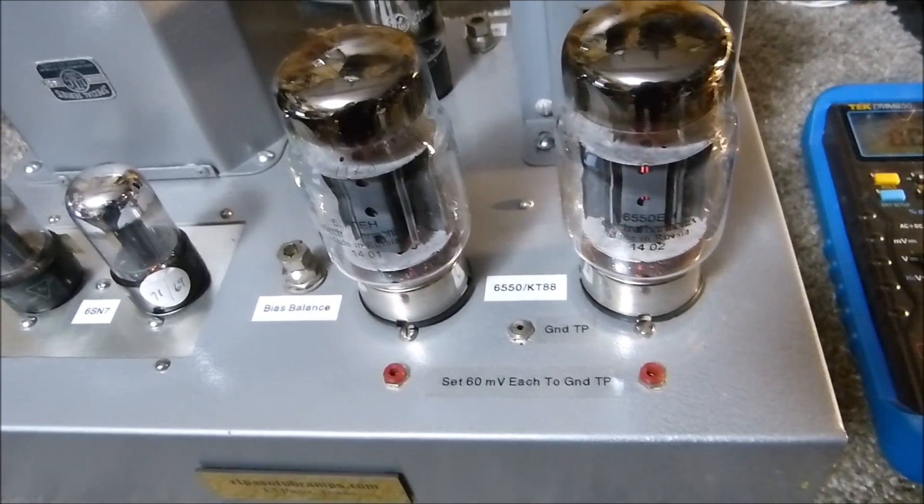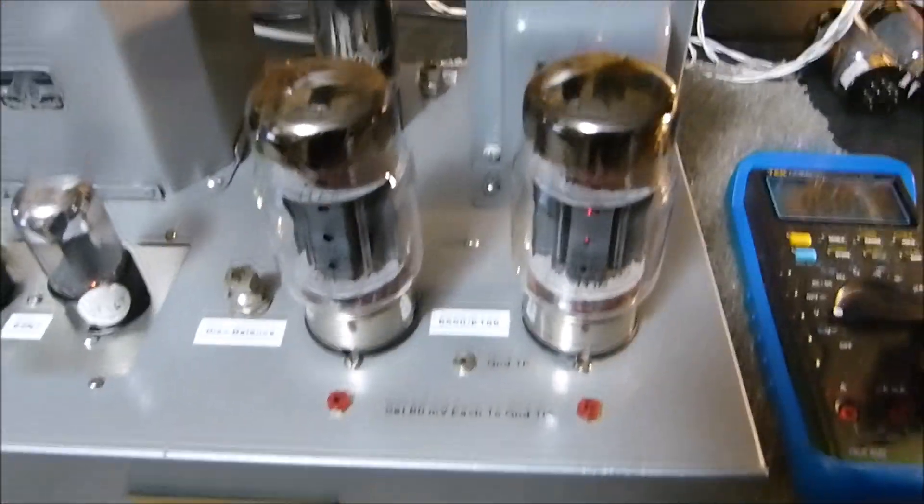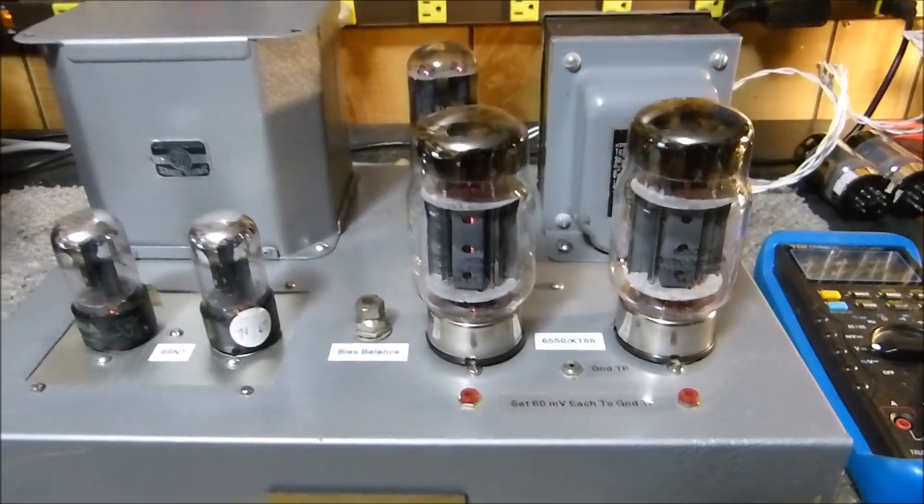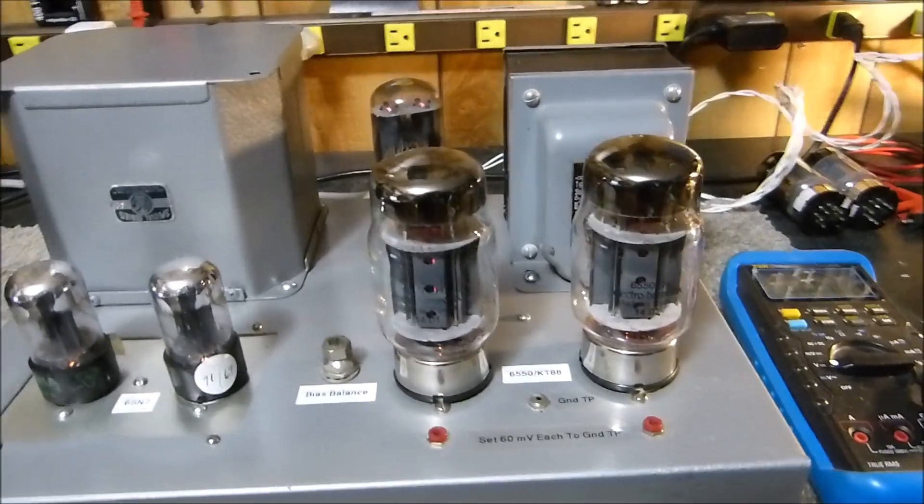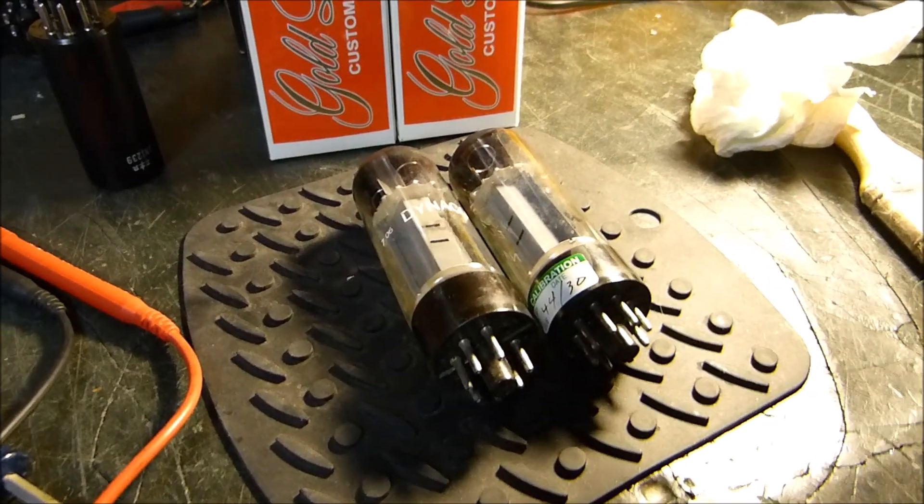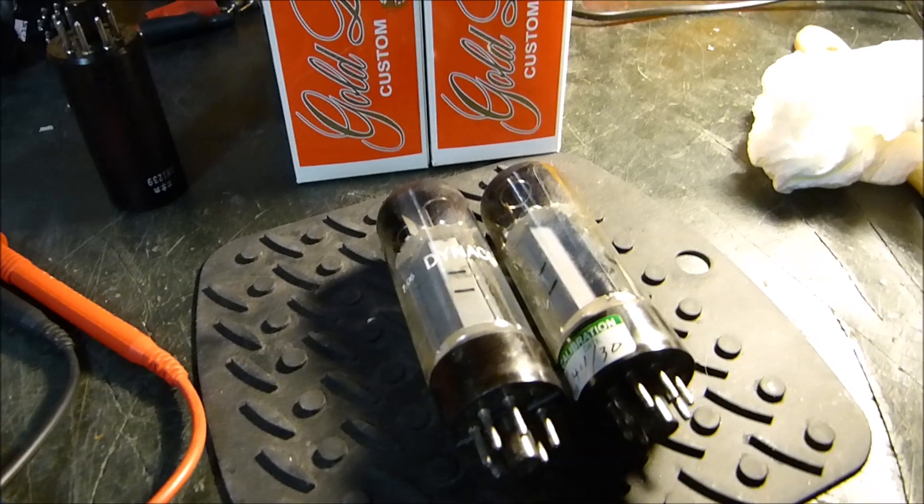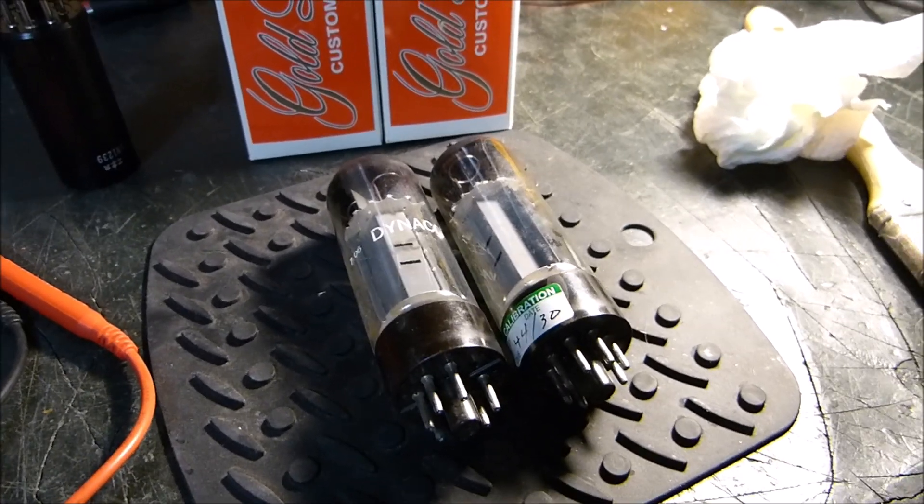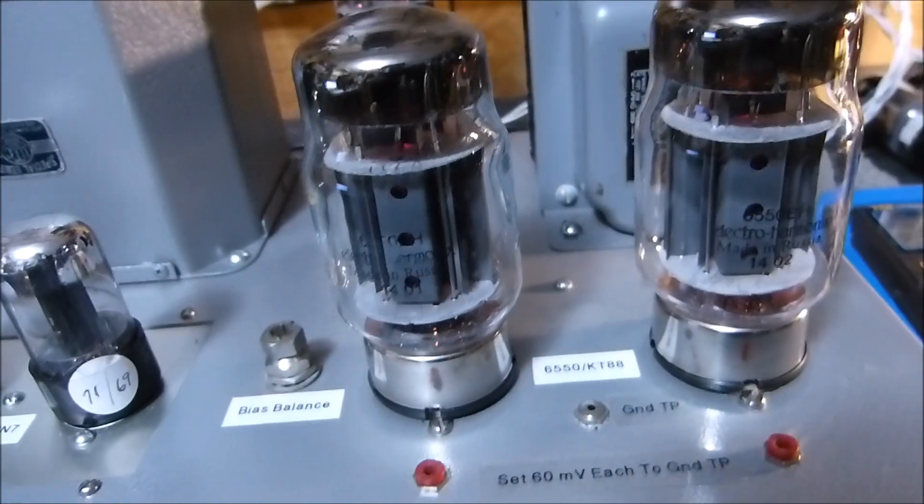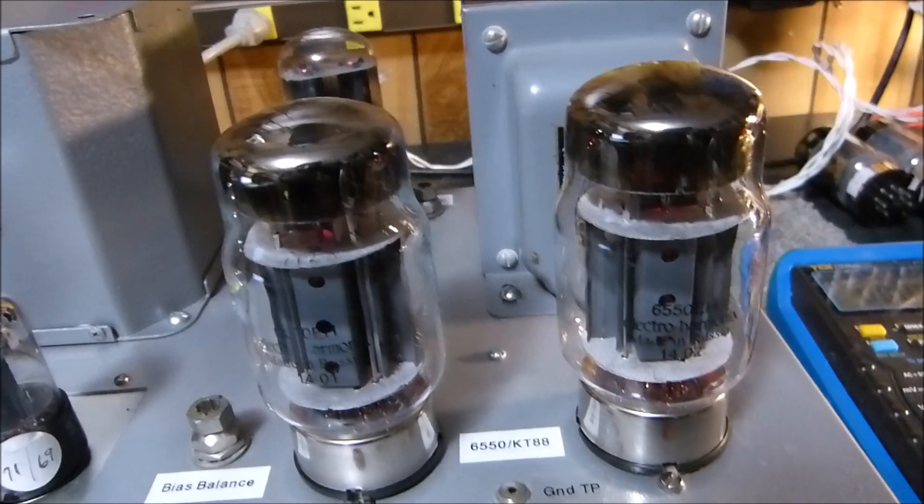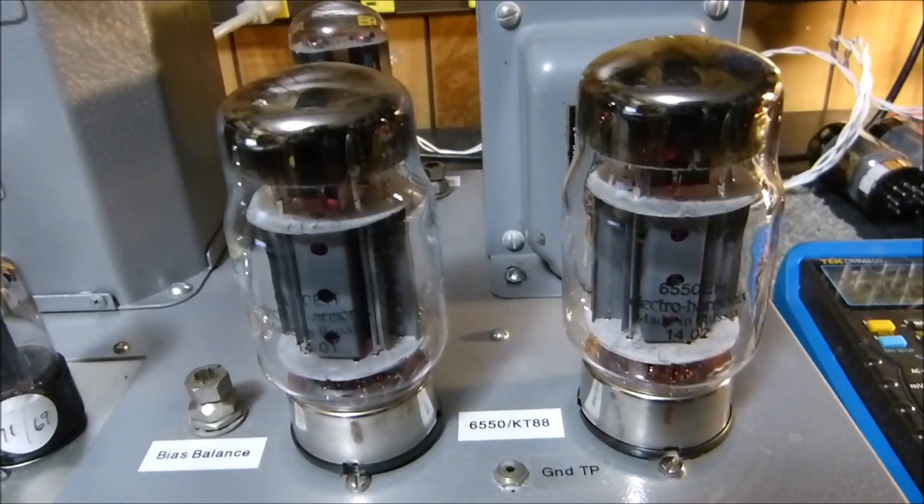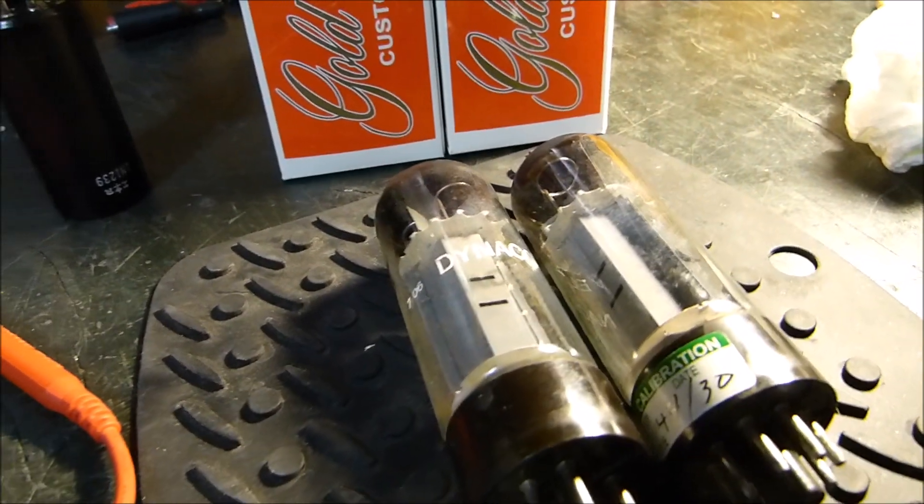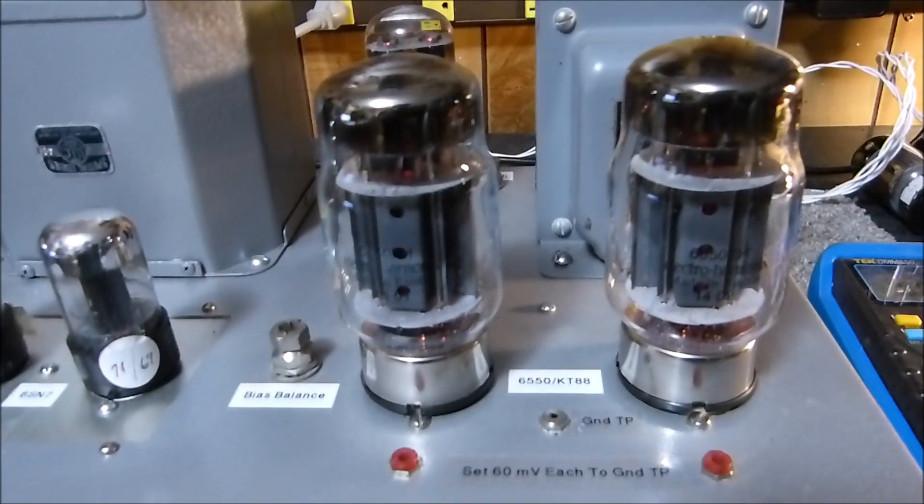We're going to look at the harmonic profile of beam power tubes like the 6550 KT88, which is the American version, and then the EL34s, which are actual real pentodes. These pentodes have three distinct wire grids in them. A beam power tube has two grids - the control grid and the screen grid - then it has beam forming plates for the suppressor grid that are internally connected to the cathode. These are actually not internally connected to anything; they come out of pin one.